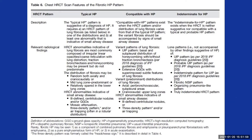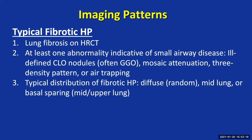Here is the table covering the different subcategories of fibrotic HP — typical, compatible, and indeterminate — representing levels of confidence. For a typical fibrotic HP pattern, you must have findings of pulmonary fibrosis, plus at least one abnormality indicative of small airway disease: poorly defined centrilobular nodules (often ground glass), mosaic attenuation, the three-density pattern, or frank air trapping.